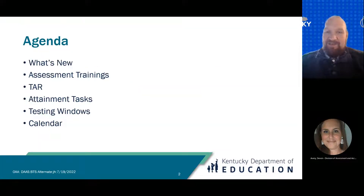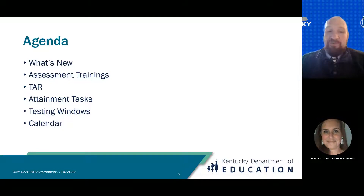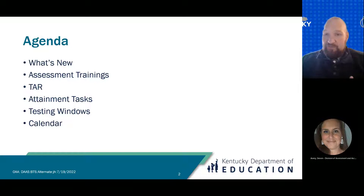As we begin, we do have an agenda. We'll go over first what's new with the assessment — there weren't a lot of changes this year, but there were some. Then we'll go through assessment trainings and the requirements, the TAR or Transition Attainment Record, the attainment task, the testing windows and their expectations, and lastly the calendar for the alternate assessment.